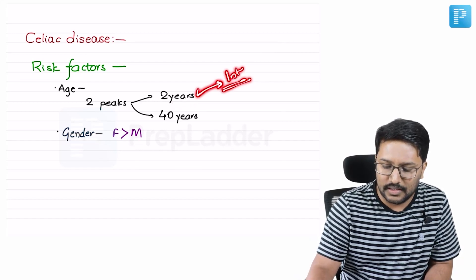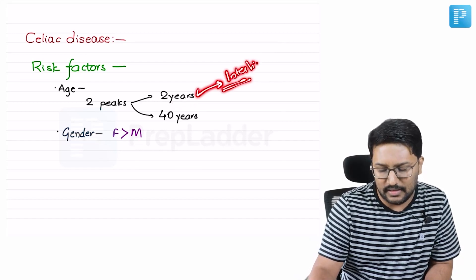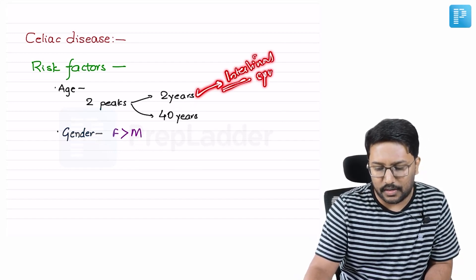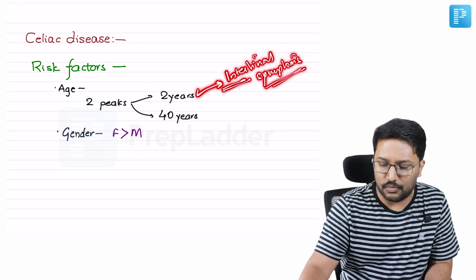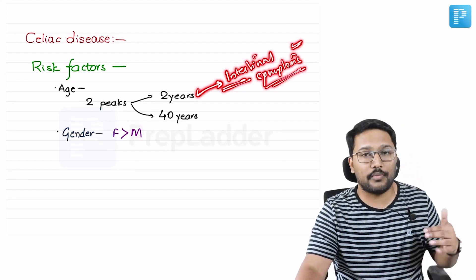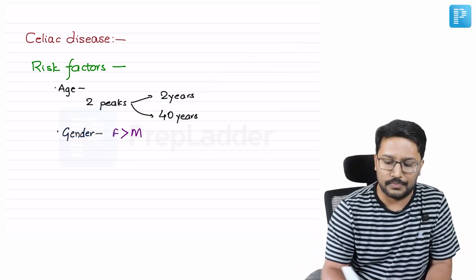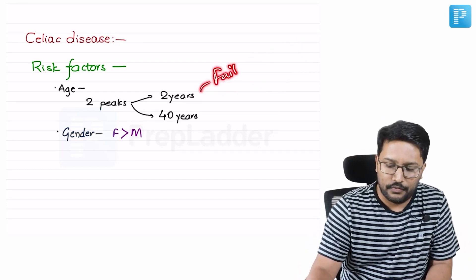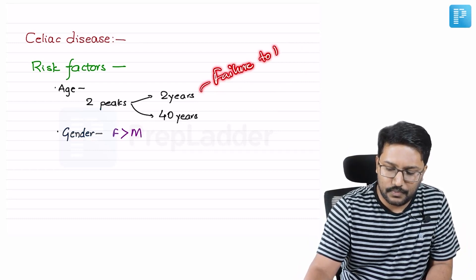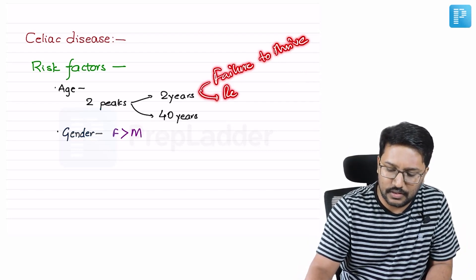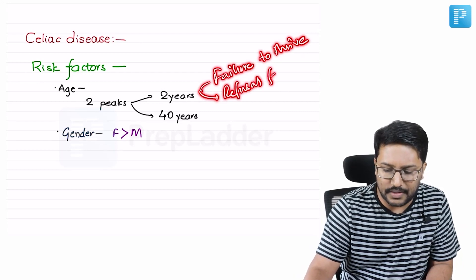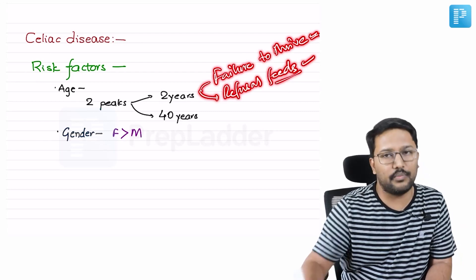These patients usually present with intestinal symptoms. Obviously, we are talking about under two years of age, so they may not complain about abdominal pain. It can take various forms — there may be failure to thrive, or refusal and apprehension about feeds. These are the usual presenting complaints.